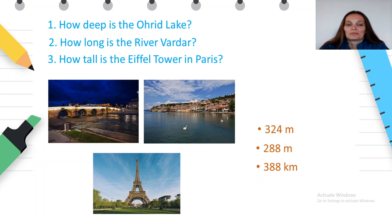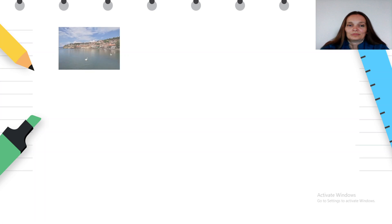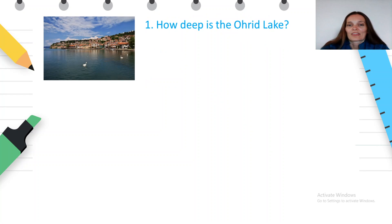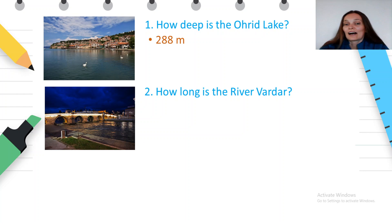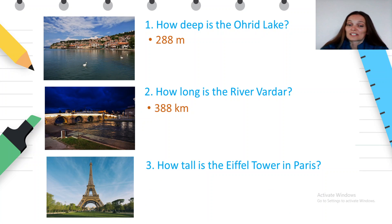Let's do some exercises now. Look at the three pictures. This is the river Vardar. This is the Oakley Lake and the Eiffel Tower in Paris. There are three questions about the pictures and three answers. Try to match them. What do you think? How deep is the Oakley Lake? How long is the river Vardar? How tall is the Eiffel Tower in Paris?